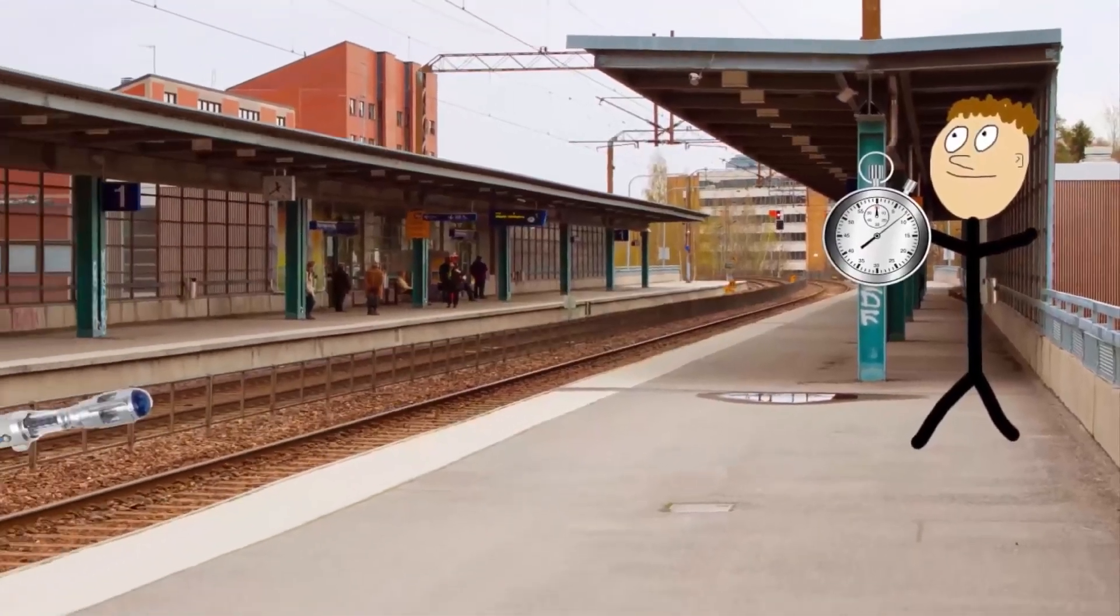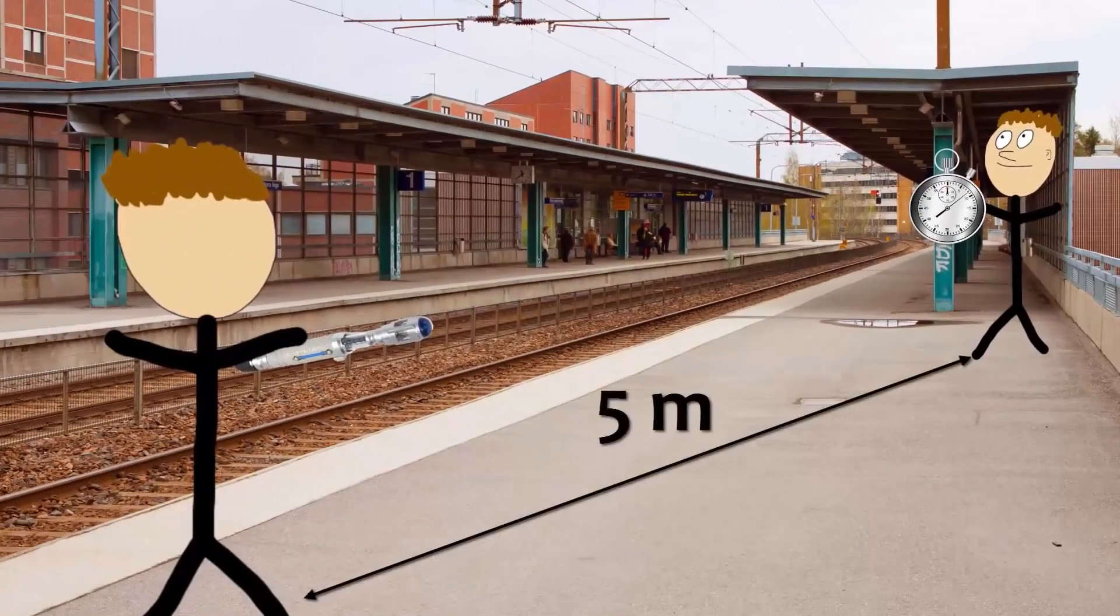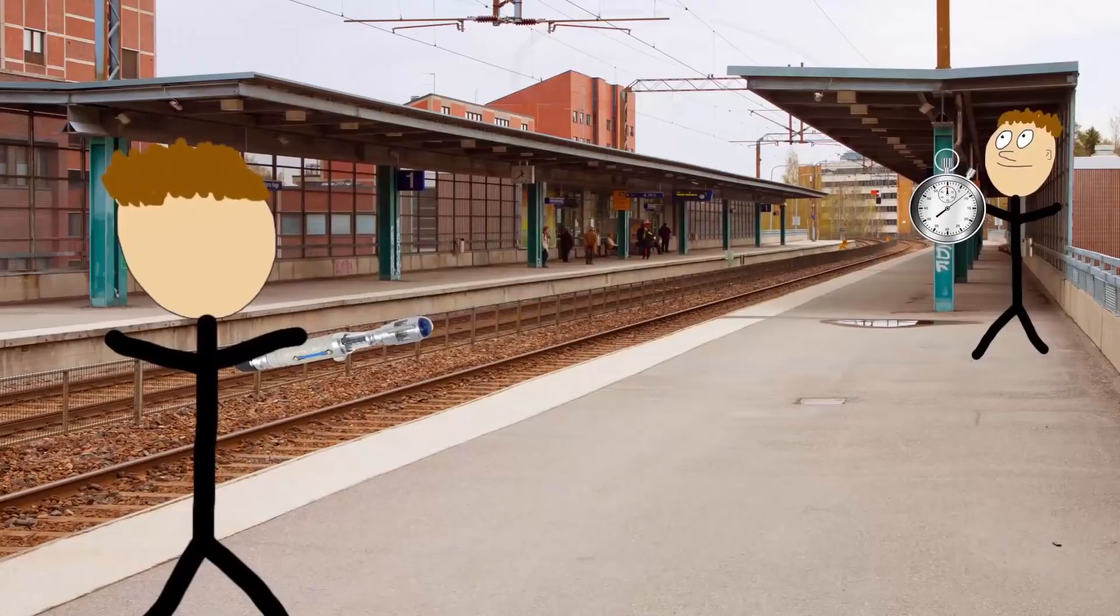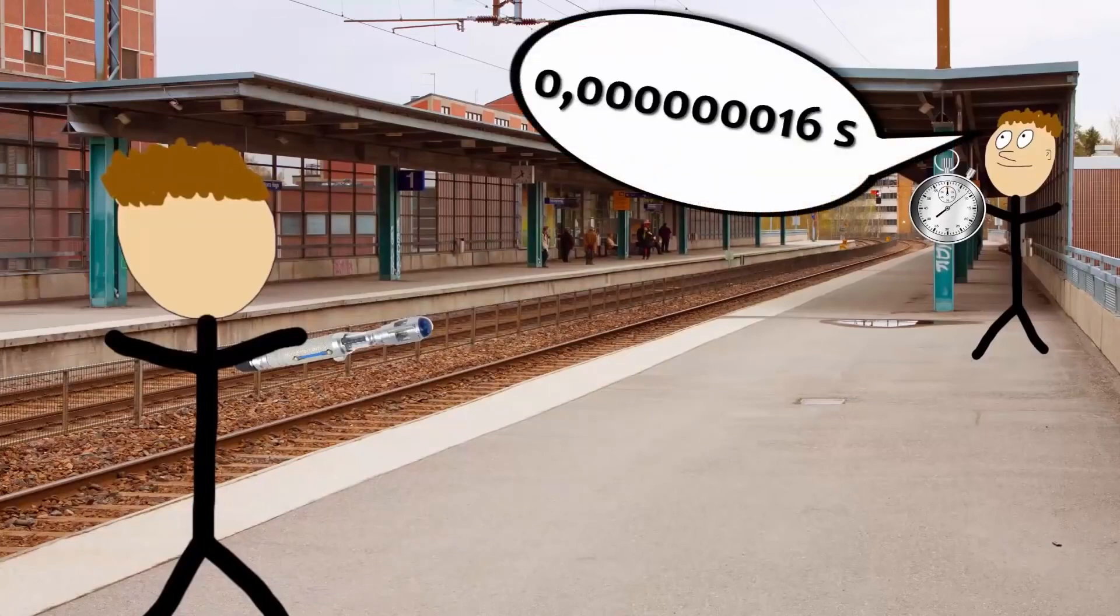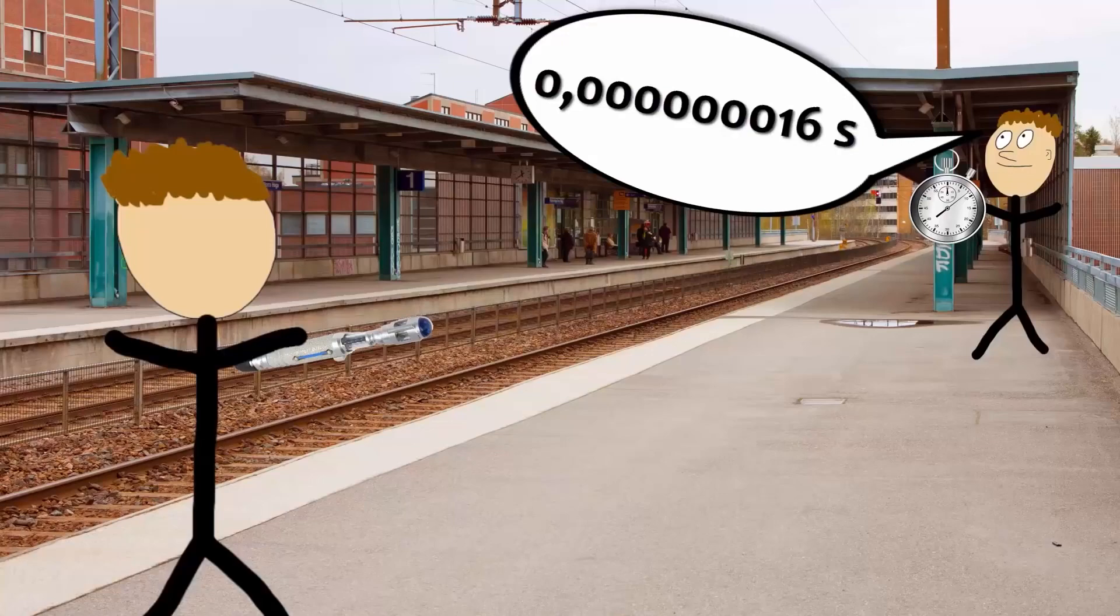Imagine that you're meeting with a friend in a train station. But the train is delayed. And to pass the time, you decide to calculate the speed of light. To do so, simply point the laser to a person, and knowing the distance between the two of you, then count the time it takes to go between the two points. If you do it right, you will get 300 million meters per second.